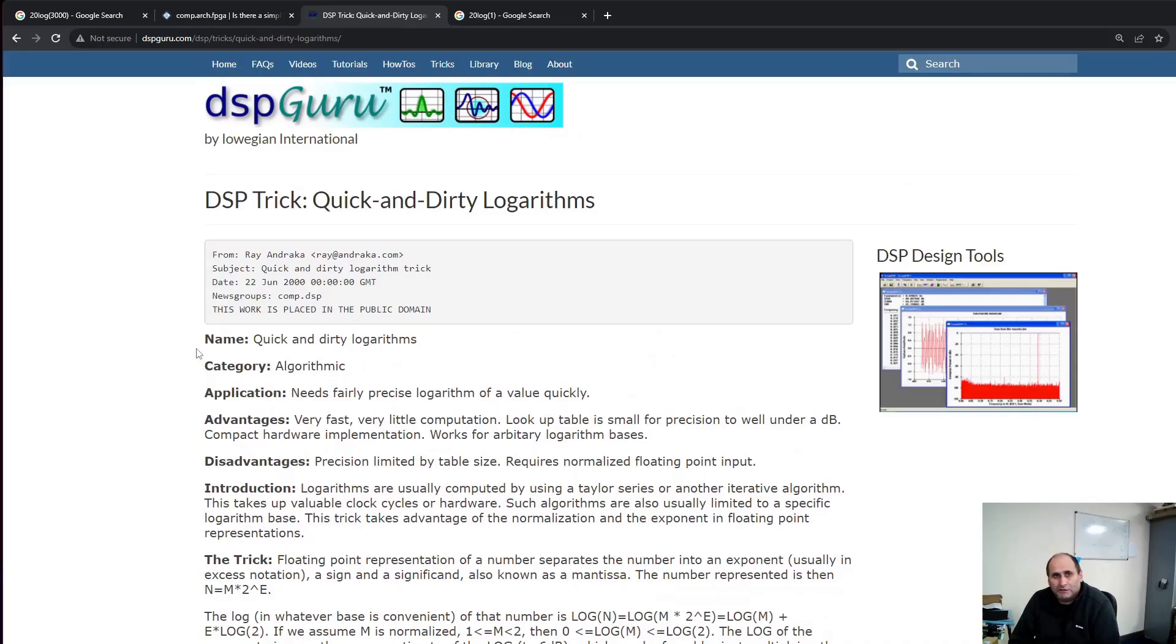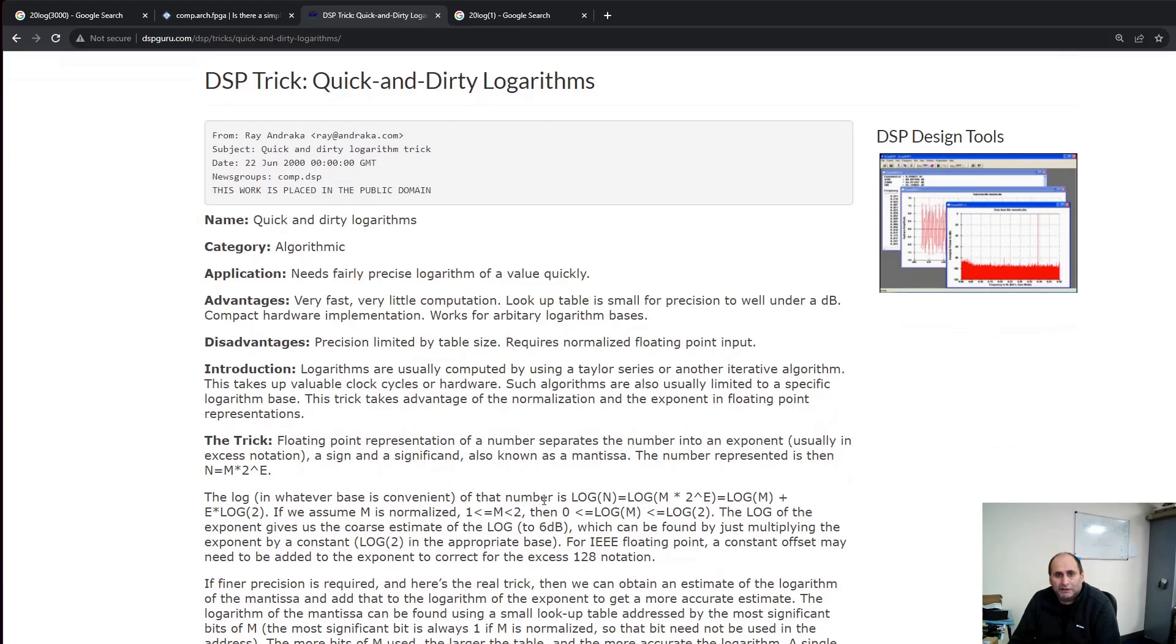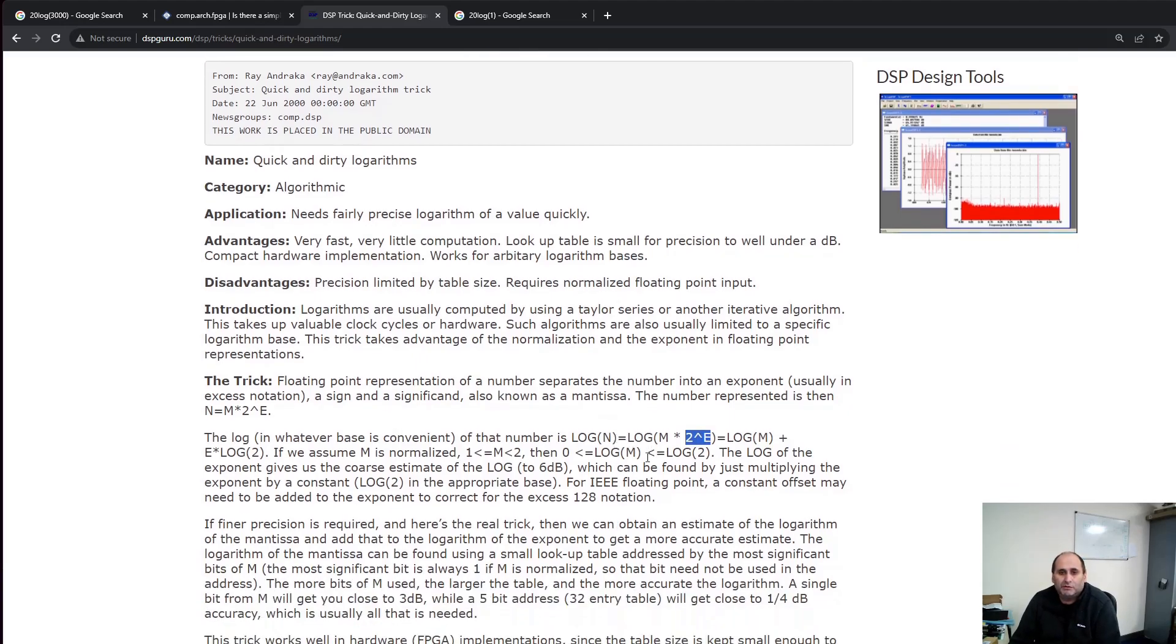So this method is actually taking that number and in order to calculate the logarithm, it's looking at two terms here. We have the mantissa and we have the exponent. The exponent is telling how big is the number. The mantissa is actually the actual number. So mantissa has some properties because it's normalized to the base, to the number 2. So it's between 1 and 2. And then we have the exponent which is basically telling how big is the number.